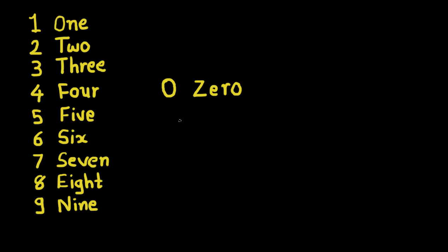So friends, in this video we learned which digit is used to show nothing left. So it is denoted as zero: Z-E-R-O, zero.